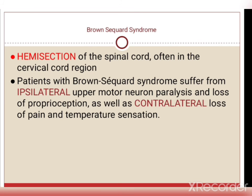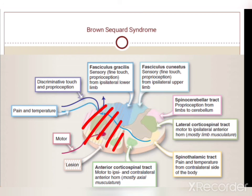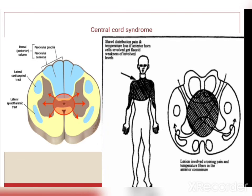Brown-Séquard syndrome is hemisection of the spinal cord — half of the spinal cord is damaged. Patients suffer from ipsilateral (same side) upper motor neuron paralysis and loss of proprioception, as well as contralateral (opposite side) loss of pain and temperature sensation. Central cord syndrome involves damage to the area around the central canal due to enlargement of the central canal.